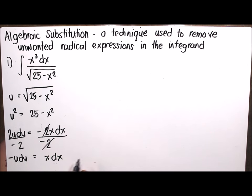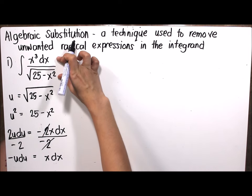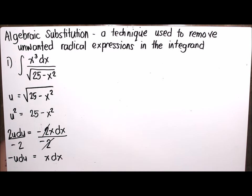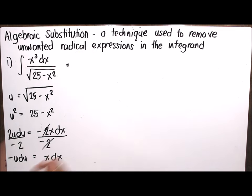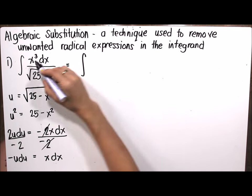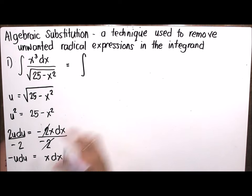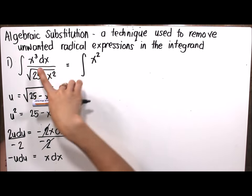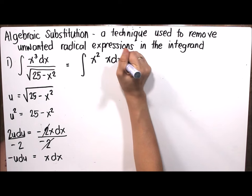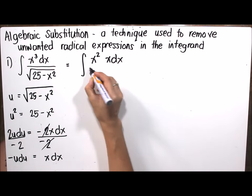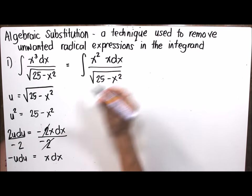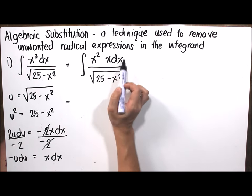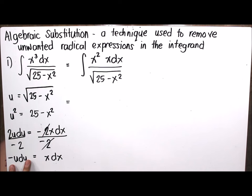We will use this equation to substitute into the given integral. Notice that our differential is x dx but the given has x cubed dx. To produce the needed differential, we rewrite the integral of x cubed dx as x squared times x dx, all over the square root of 25 minus x squared.